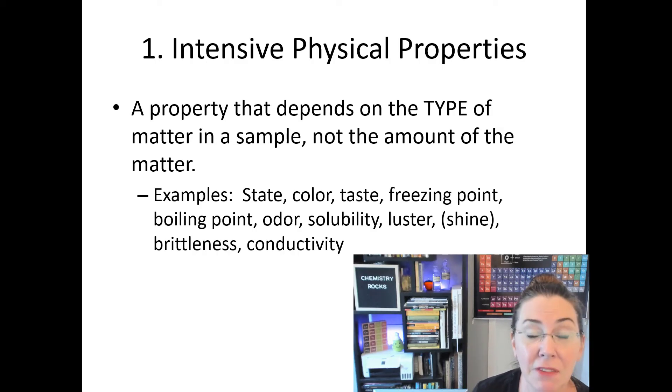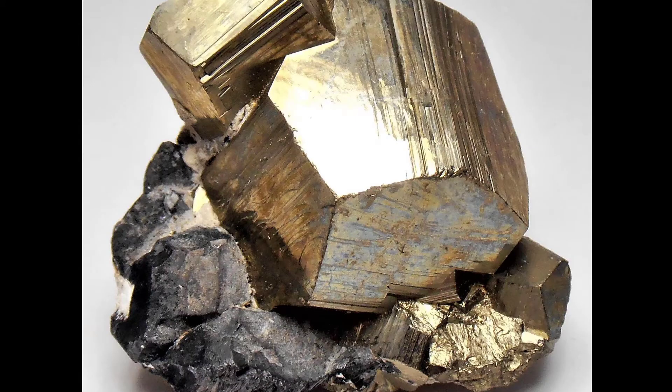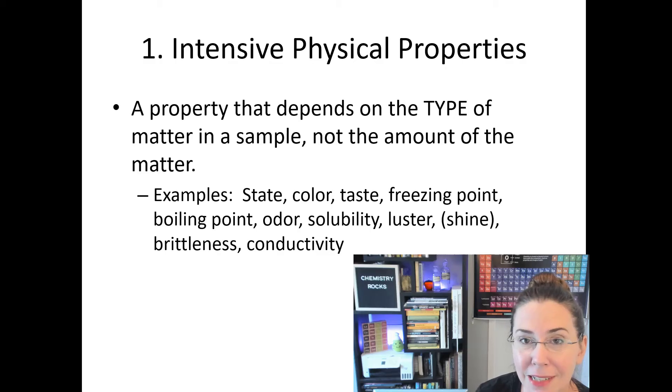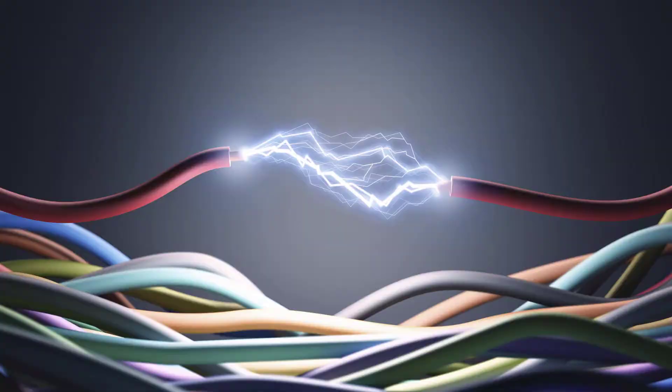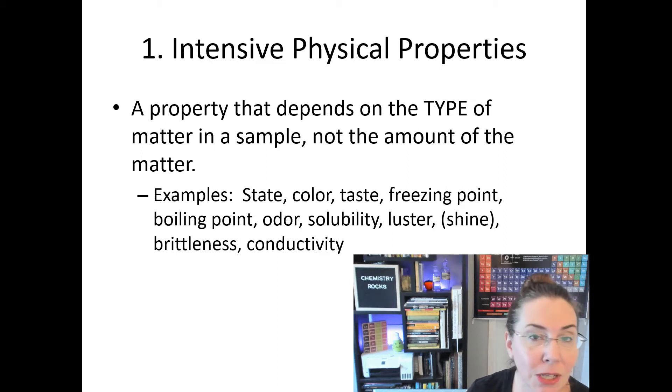Luster or shine, that's not going to change. If I have a small amount of gold, it's just as shiny as a large amount of gold. Brittleness. If I have a small piece of clay, it's just as brittle as a large piece of clay. And conductivity, a small length of wire is just as conductive as a longer length, specifically if we're talking about something like copper.